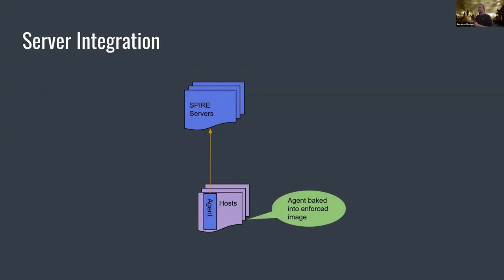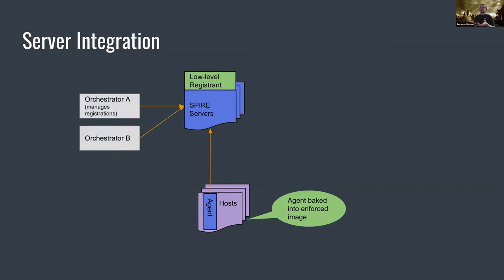For our server deployment and integration — already covered in general by Andrew Harding and Evan Gilman — we have the Spire server cluster in the data center. We have Spire agents deployed on every single host, attesting with Spire server and syncing on what registrations they're responsible for. The Spire agents are baked into an enforced image fleet-wide to ensure they're present. Next to the Spire server we have a low-level registrant that we own — a service that creates Spire registrations for things very low in the stack that would otherwise not be able to get identity. For instance, that includes orchestrators of workloads.